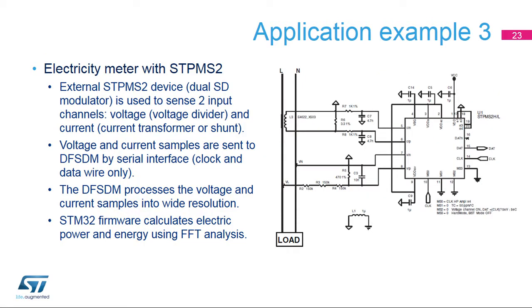This example shows a typical one-phase electricity meter design using an STP-MS2 device and STM32 microcontroller. The STP-MS2 is a dual-channel Sigma Delta modulator designed for electricity meter applications. It has voltage and current channel inputs. The current channel features a programmable gain amplifier to cover a wide range of measured currents. Sampled 1-bit data are sent by the serial interface to the DF-SDM interface. Both voltage and current 1-bit data samples are sent on the same data wire, but the voltage is sampled on the rising clock edge while the current is sampled on the falling clock edge.